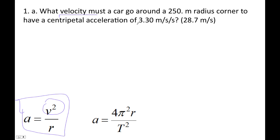So this is our acceleration. That's our radius right there. We're just going to plug it in here. We've got a = v²/r. So therefore, 3.3, that's our acceleration, is equal to v² divided by 250.